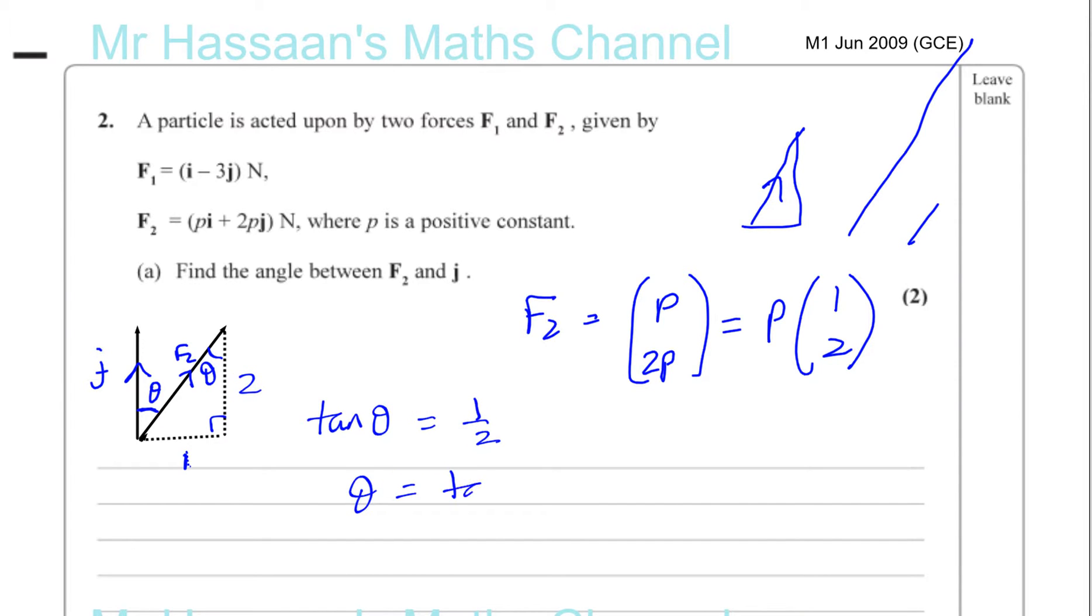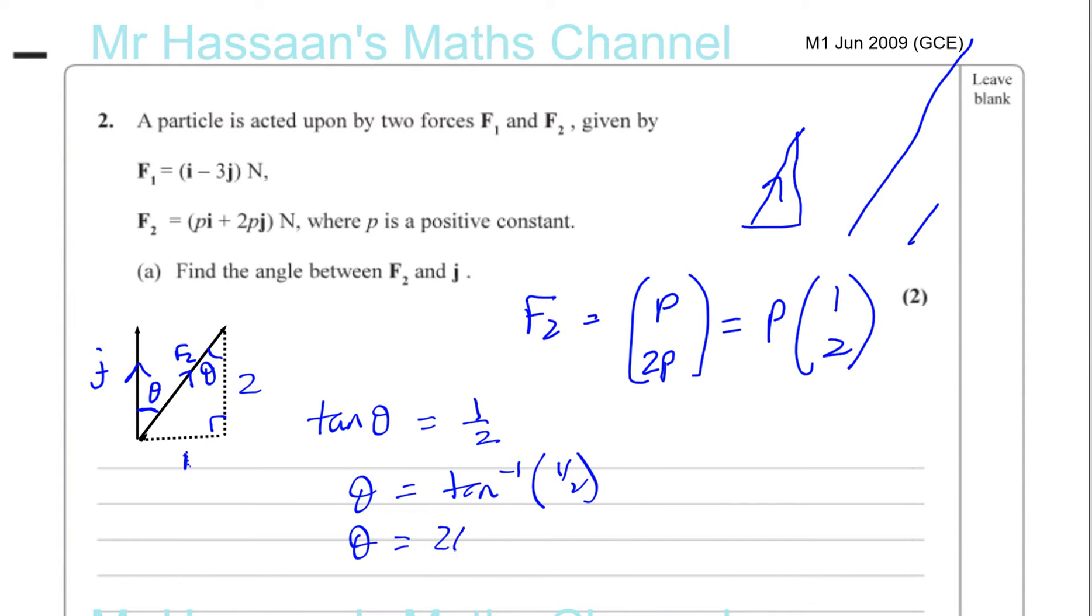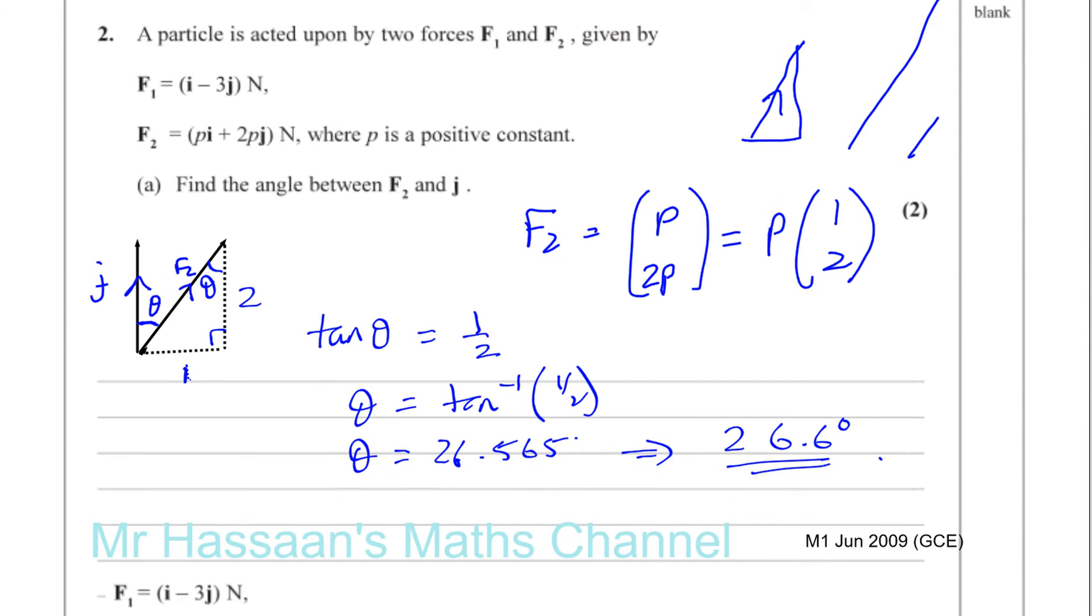So the angle itself is equal to inverse tan of a half. So the angle we're looking for is going to be given by inverse tan of a half, which gives 26.565. Which we round to one decimal place. So you get 26.6 degrees as your answer to question A. The angle between F2 and J.